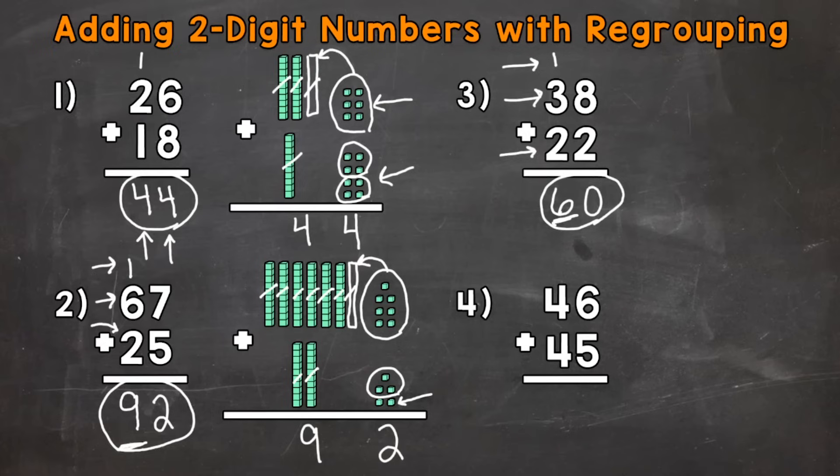Let's move on to number 4, where we have 46 plus 45. Start with the ones. So we have 6 plus 5, which is 11. So we put the 1 from the ones place in 11 in the ones place. And we regroup, or carry, the 1 group of 10 to the tens place.